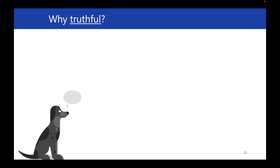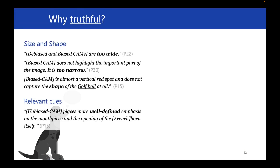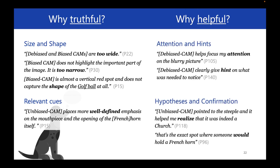By analyzing participants' rationales, we found that participants consider saliency maps more truthful or representative because the highlighted regions have accurate size and shape, or capture more semantically relevant cues. They would consider the saliency map helpful for recognizing a blurry image, since it helped focus human attention or provided hints, benefiting the process of forming hypotheses and confirming suspected objects.